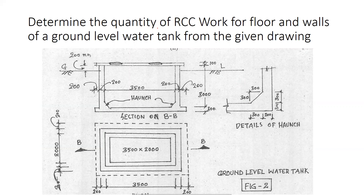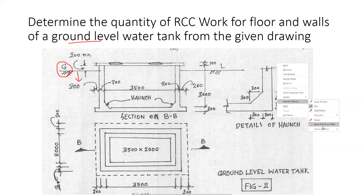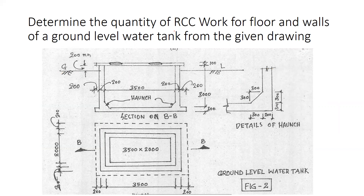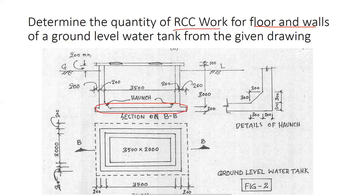Determine the quantity of RCC work for the floor and walls of a ground-level water tank from the given drawing. We have to write the main portion covering the floor and walls of the RCC work, and find the quantity of steel and concrete.